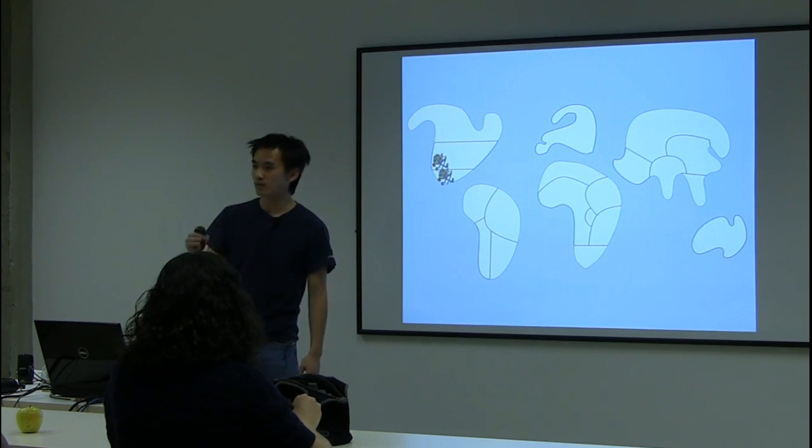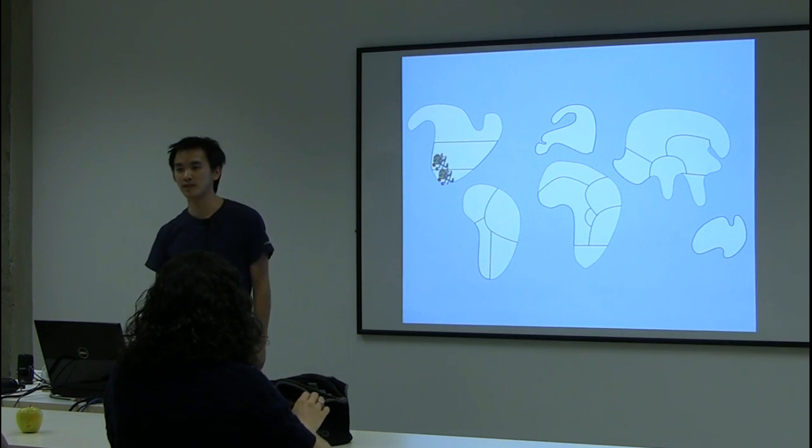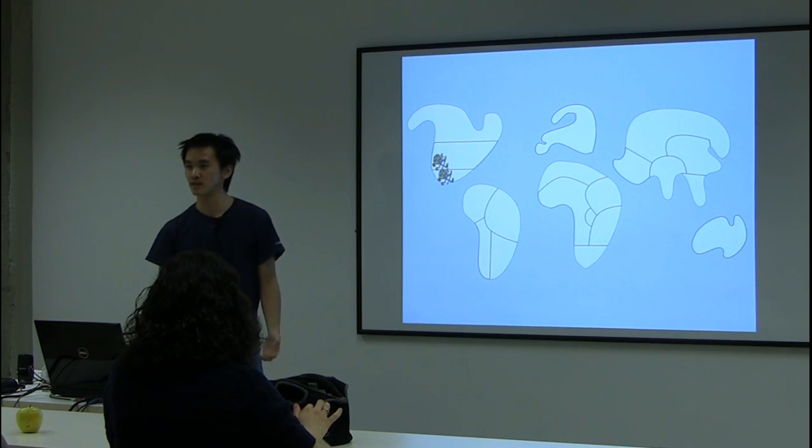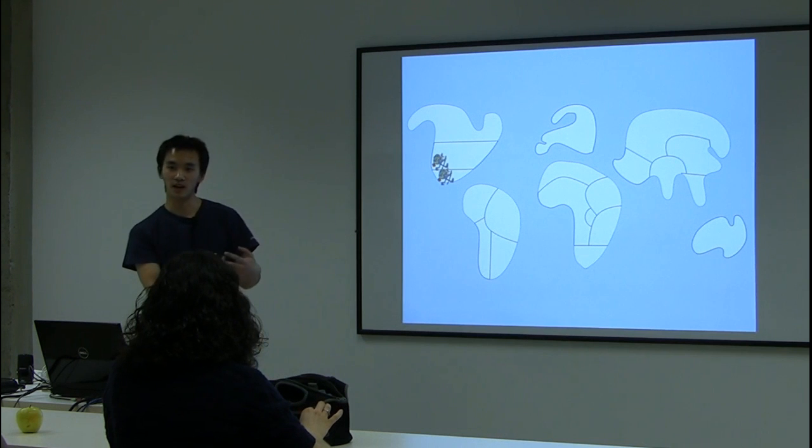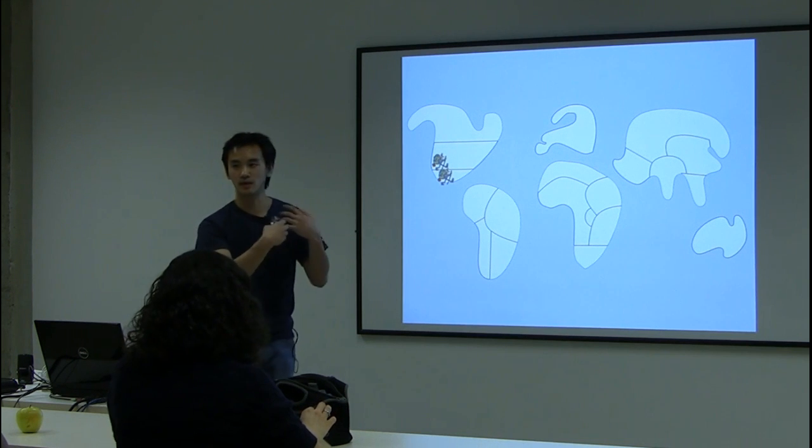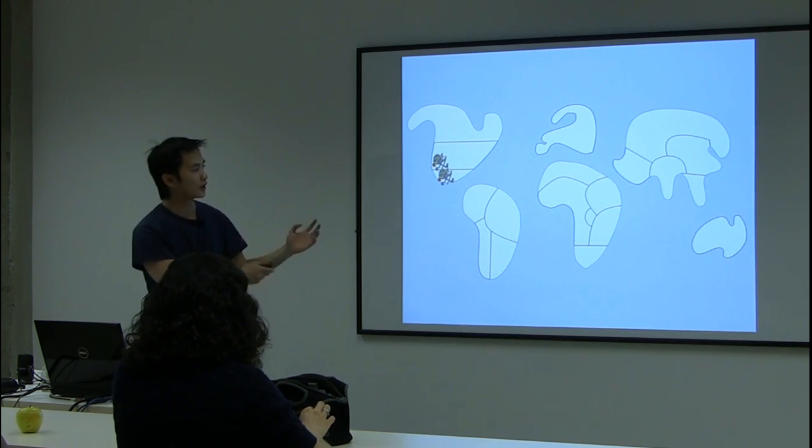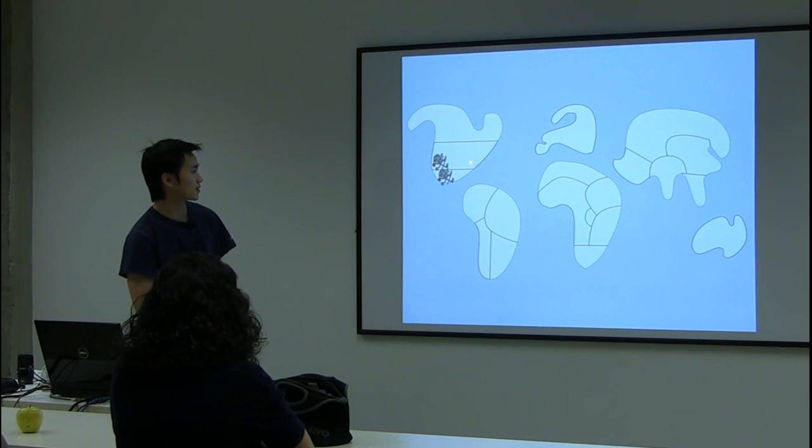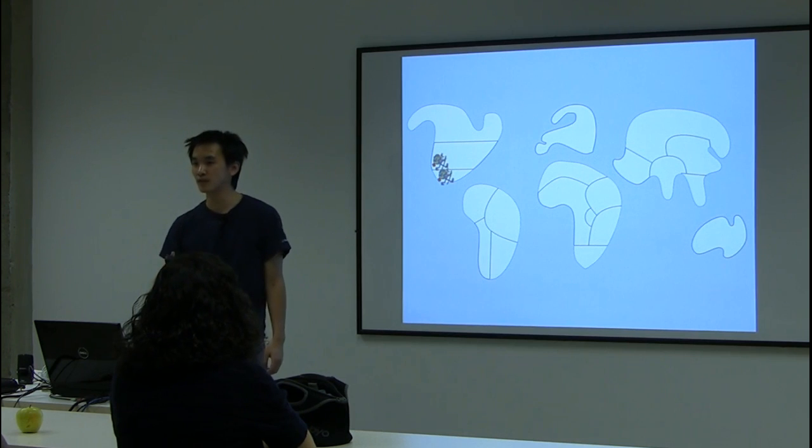One of the big questions that has been raised is what's the minimum number of colors that you need to color the map, the countries of this map, such that you can recognize the countries? This boils down to coloring the countries with colors such that two countries which are near each other, for instance this one and this one, are colored with different colors.